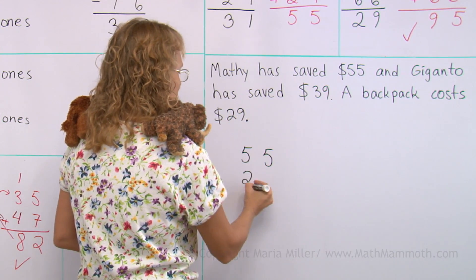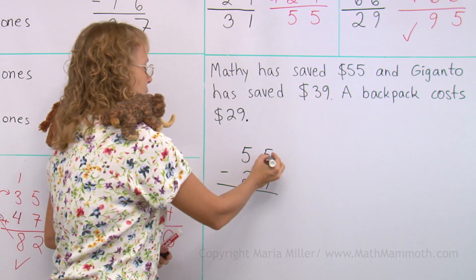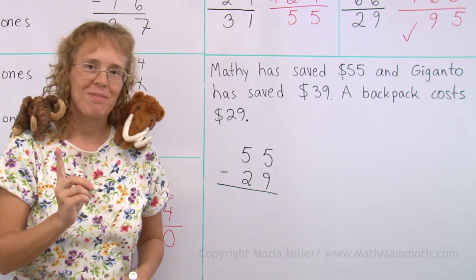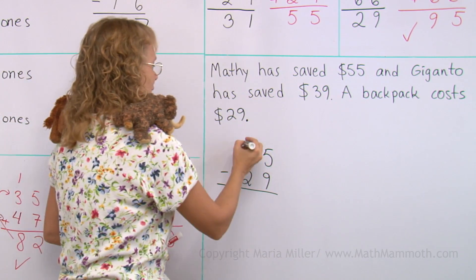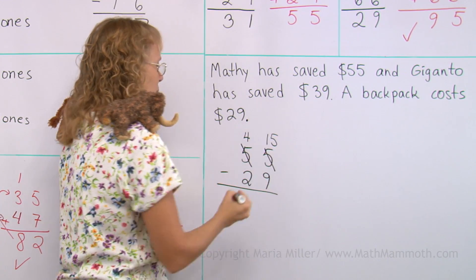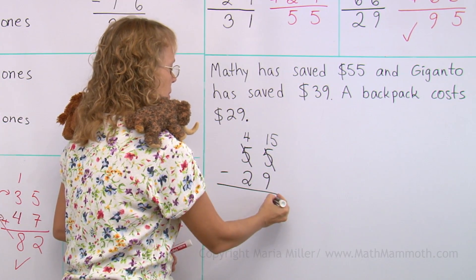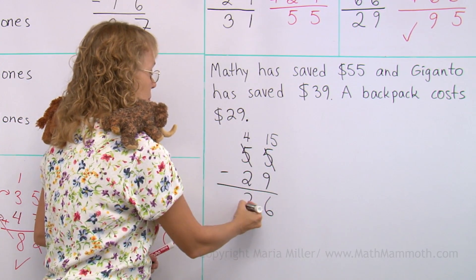$55 minus $29. Okay. 5 minus 9, I cannot do it. Need to regroup. Take a 10 from here and regroup it with the ones. 15 minus 9, 6. 4 minus 2, 2.